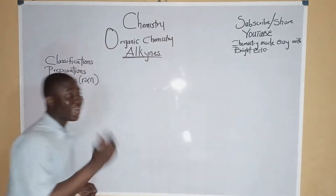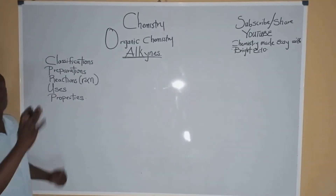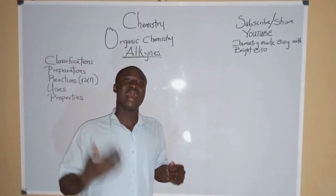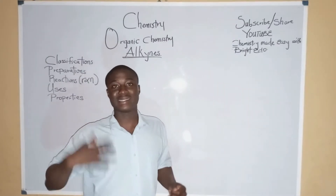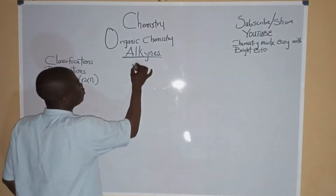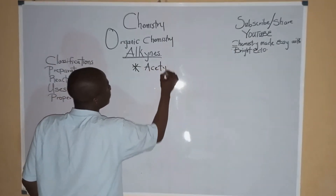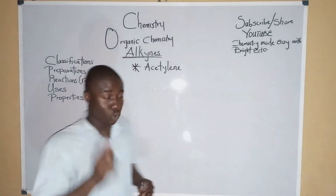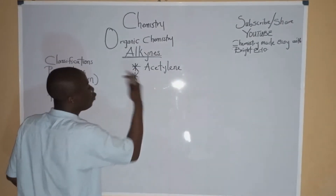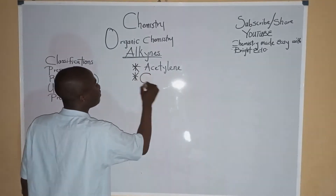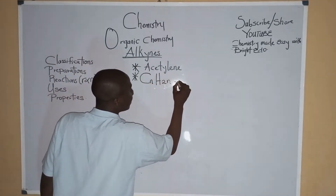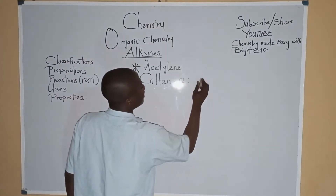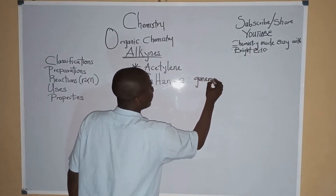I'll be using these outlines to explain the concepts of alkynes. Alkynes are a group of organic compounds and they are also referred to as acetylene. The general molecular formula for alkynes is CnH2n-2.